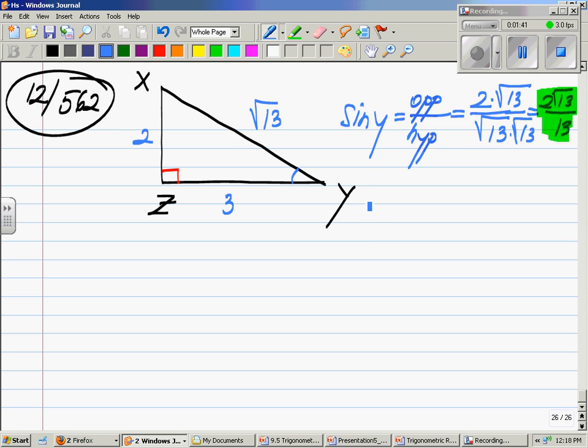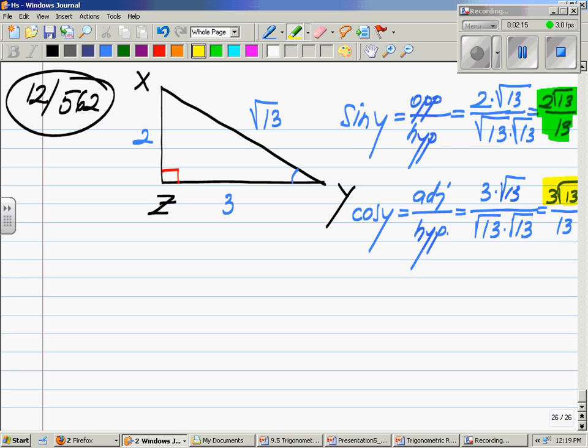Cosine Y equals the adjacent over hypotenuse. Your adjacent, in this case, is 3 over square root 13. Same story. I cannot have radical at the bottom here, as my denominator. So, I'll multiply by square root 13, top and bottom. And this will equal 3 square root 13 over 13. That's your cosine Y.